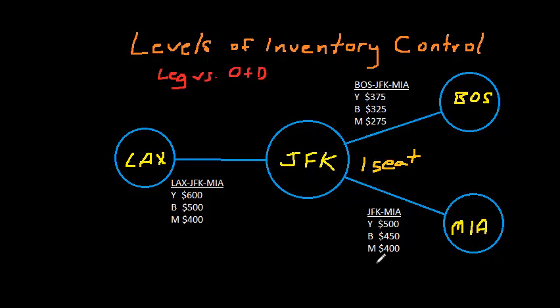So let's start by seeing what would happen if the airline was using a leg-level revenue management system. The objective of a leg-level system is to maximize revenue to the flight leg. So in this case, JFK to Miami. A leg-level system does not consider the network contribution when it calculates its controls.